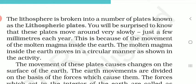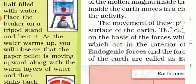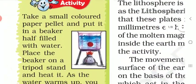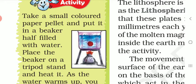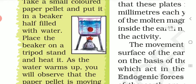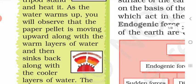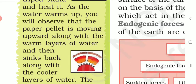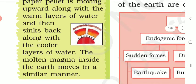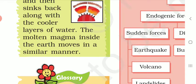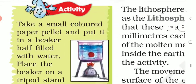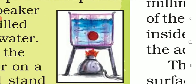As shown in the activity: take a small colored paper pellet and put it in a beaker half filled with water. Place the beaker on a tripod stand and heat it. As the water warms up, you will observe that the paper pellet moves upward along with the warm layers of water and then sinks back down — moving in a circular manner.